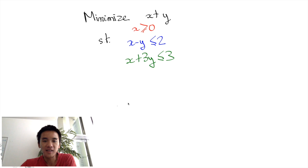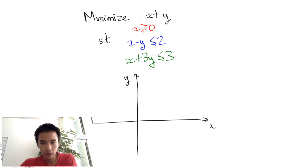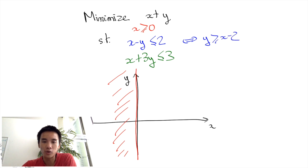To understand this linear program, we can draw its set of feasible solutions. The inequality x greater or equal to 0 means that feasible solutions are on the right of the y-axis. The inequality x minus y at most 2 can be rewritten as y greater or equal to x minus 2, which means that feasible solutions are above the diagonal line that's two units below the main diagonal.